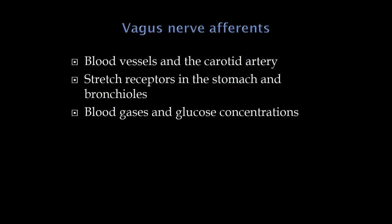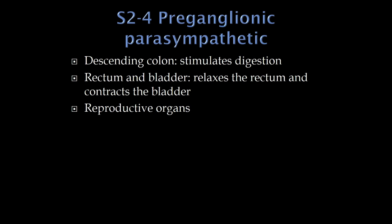The last part is S2–S4 — the sacral component of craniosacral for parasympathetics. These stimulate the descending colon for digestion. Everything we talk about with parasympathetics uses acetylcholine on muscarinic receptors. It acts on the bladder and on the rectum; we'll go through the detailed anatomy of that later. It also supplies the reproductive organs.